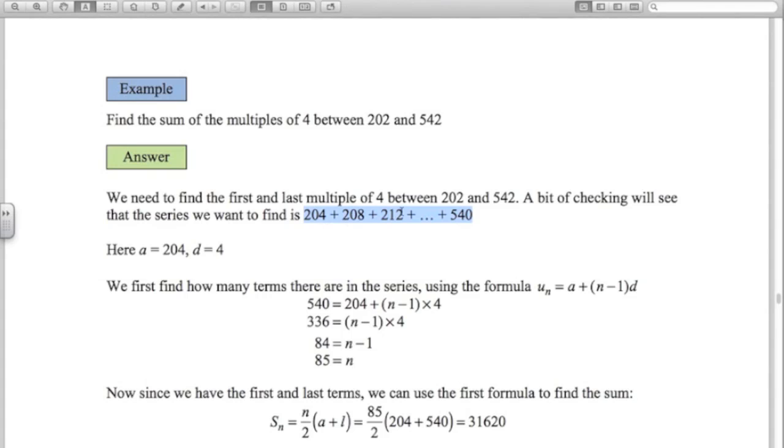So really we want to find this sum here, the sum of the numbers from 204 to 540. This is an arithmetic progression. The difference between each term is 4, so d is 4. a is 204, so we've got it.